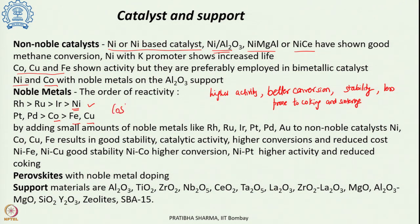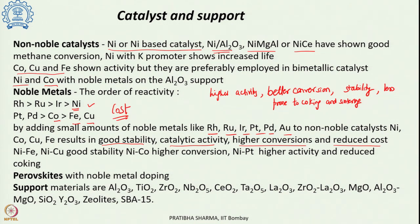The major problem with noble metals is cost. To achieve high activity, stability, conversion, and selectivity cost-effectively, a small amount of noble metal — rhodium, ruthenium, iridium, platinum, palladium, or gold — can be added to non-noble metal catalysts like nickel, cobalt, copper, or iron, providing stability, catalytic activity, and higher conversion at reduced cost. Bimetallic combinations such as Ni-Fe and Ni-Co show very good stability; Ni-Co shows higher conversion; Ni-Pt shows higher activity and reduced coking. Transition metal-based catalysts and perovskites with noble metal doping are also used.